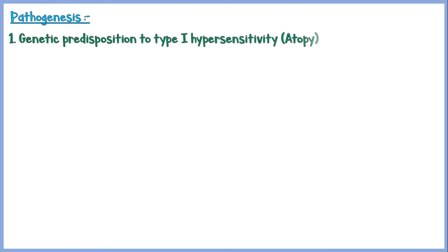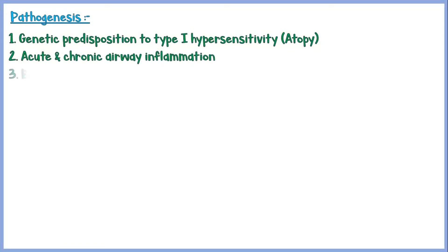First, let's discuss the pathogenesis of asthma. The major etiologic factors of asthma are: genetic predisposition to type 1 hypersensitivity, also known as atopy; acute and chronic airway inflammation; and bronchial hyper-responsiveness to a variety of external stimuli.